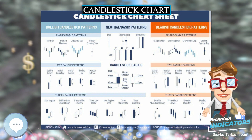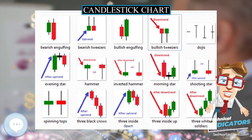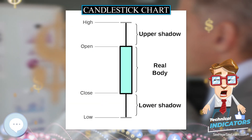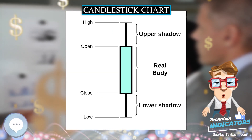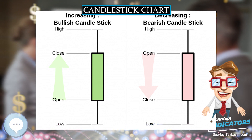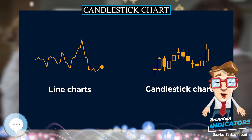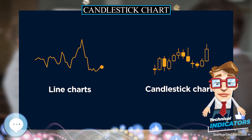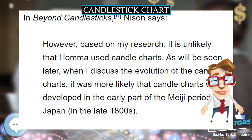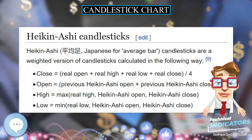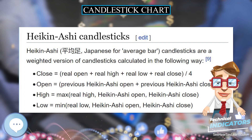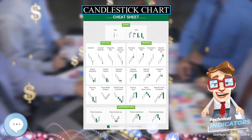The area between the open and the close is called the real body. Price excursions above and below the real body are shadows, also called wicks. Wicks illustrate the highest and lowest traded prices of an asset during the time interval represented. The body illustrates the opening and closing trades. If the asset closed higher than it opened, the body is hollow or unfilled, with the opening price at the bottom and the closing price at the top. If the asset closed lower than it opened, the body is solid or filled, with the opening price at the top and the closing price at the bottom.